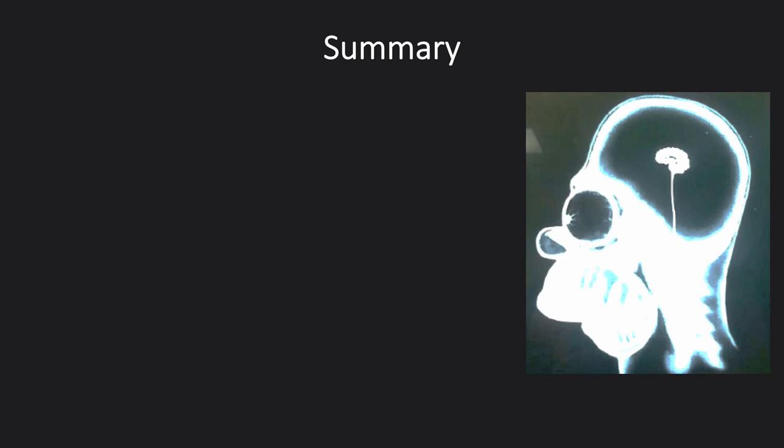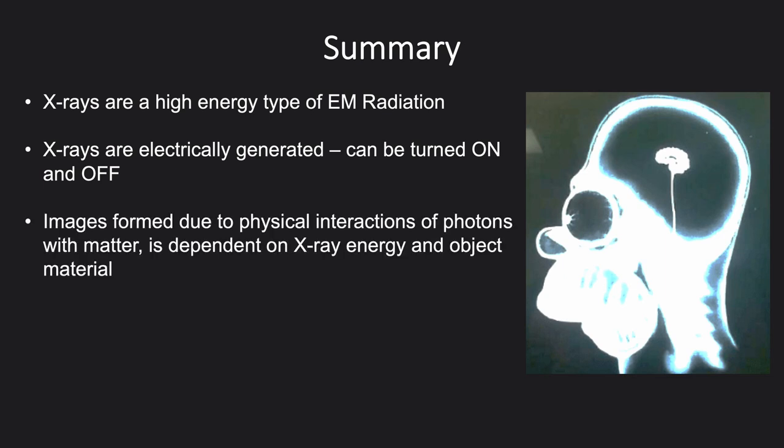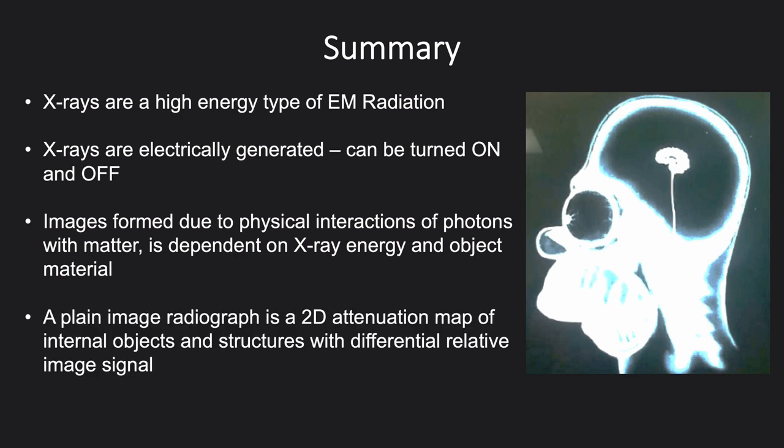Here are some key take-home messages from today's presentation. X-rays are a high energy type of electromagnetic radiation that are also penetrating. They can be electrically generated, thus we can control them in terms of where we can turn them on and we can turn them off. Images are formed due to the interactions of X-ray photons within matter, whether this is the photoelectric effect or Compton scattering, where there is a dependency on the X-ray photon energy and the object material. A plane image radiograph is effectively a 2D attenuation map of internal objects and structures where due to difference in relative attenuation does result in differences in contrast, enabling objects to be easily visualized, though there are limitations to 2D radiograph imaging as well.